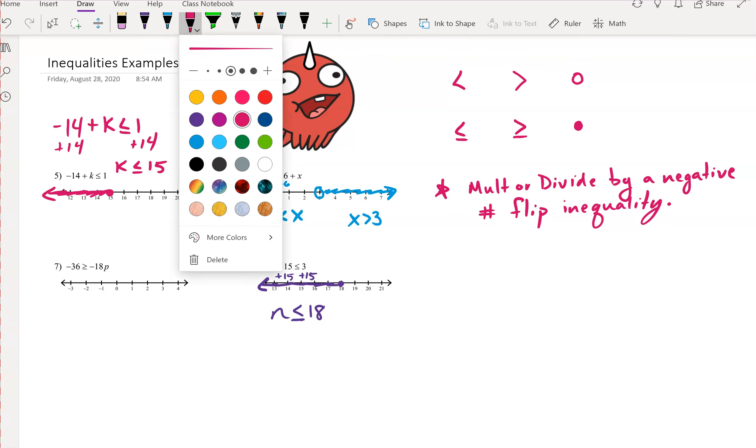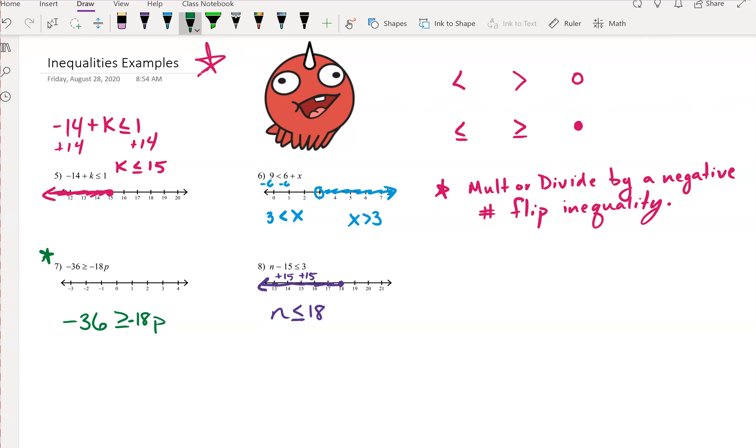Alright, last but not least, let's pick a different color here. We see on this particular problem, right here, this example, that in order to solve, we have a negative 18p. In order to solve we are going to have to divide both sides by negative 18. So here is where this idea of flipping your inequality is going to come into practice.